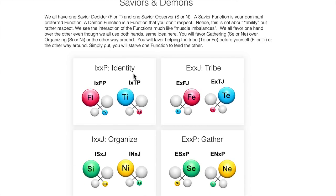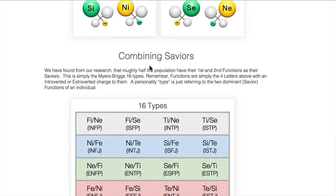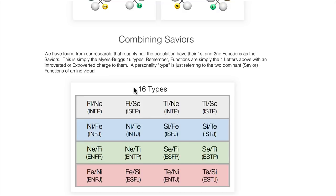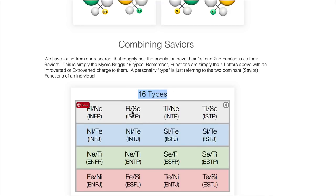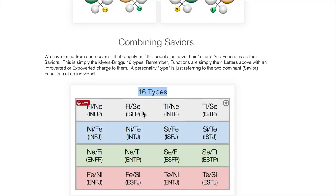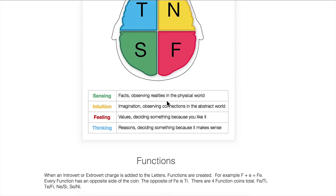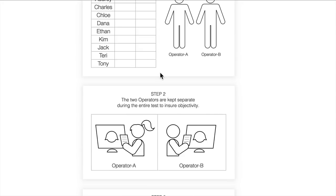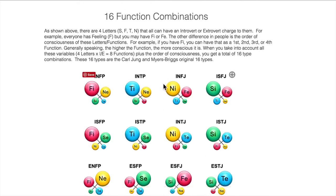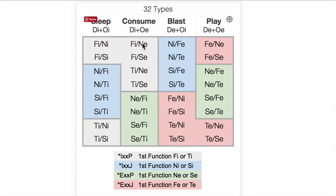Then you get these temperaments, the IPs, the EJs, then you combine the saviors. The 16 types are basically just assuming people's top two functions are their savior functions, and that is true for half the population. But once we started doing our objective typing, actually testing ourselves, tracking the data, seeing if we're getting people the same, we found that to get consistent results, you have to factor in that 50% of the population is actually jumping. You got your standard Myers-Briggs types in the middle, and these other types that Myers-Briggs is not familiar with. Either yourself or half of your friends and family are going to be double introverted or double extroverted.